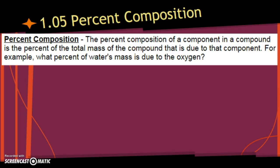Hey chemistry, this is KJ here, and I am going over 1.05% composition. So, we'll look at our definition first. Percent composition. The percent composition of a component in a compound is the percent of the total mass of the compound that is due to that component.